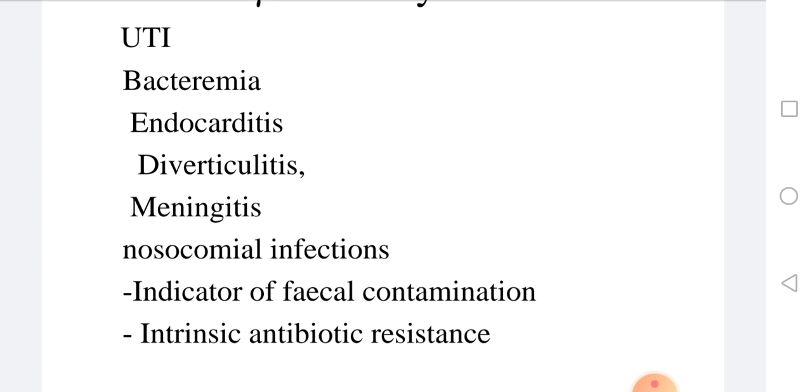They can be used as an indicator of fecal contamination. So for example, if water is expected to be contaminated with fecal material, human fecal material, you can test for the presence or absence of enterococci. But I'd like to mention to you that the best indicator is E. coli for fecal contamination.